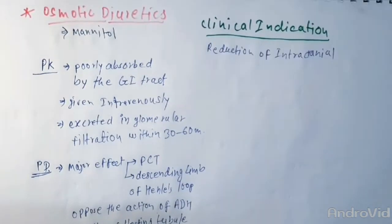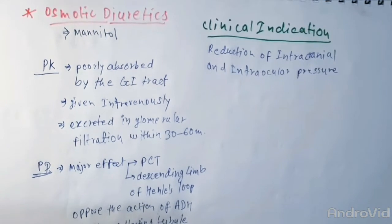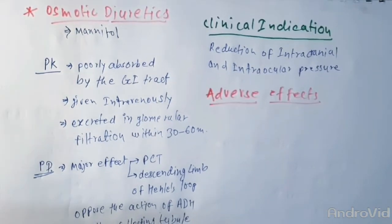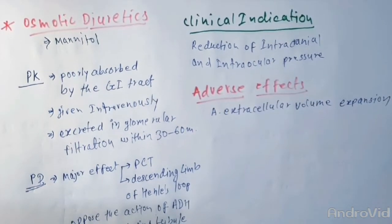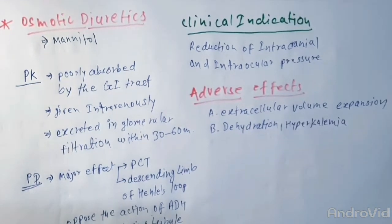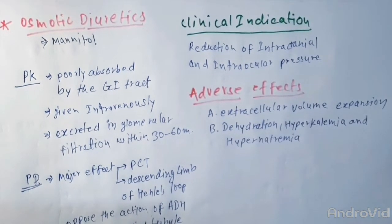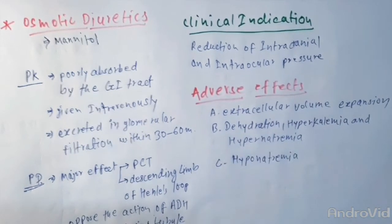They increase the urine volume by preventing the normal absorption of water. The increase in urine flow decreases the contact time between fluid and the tubular epithelium, thus reducing sodium and water reabsorption. The resulting natriuresis is of lesser magnitude than the water diuresis, leading eventually to excessive water loss and hypernatremia.